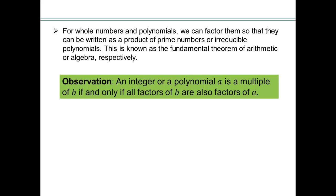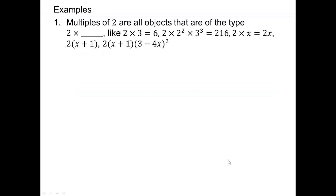Our observation is that any integer or polynomial A is a multiple of B if and only if all factors of B are also factors of A. For example, 6 is a multiple of 2 because all factors of 2 are also factors of 6. Let's take a closer look at this.